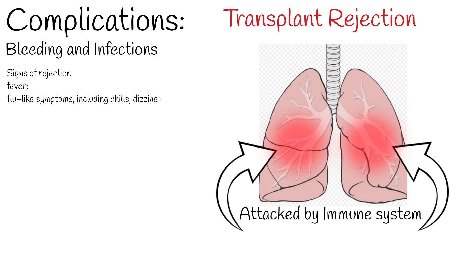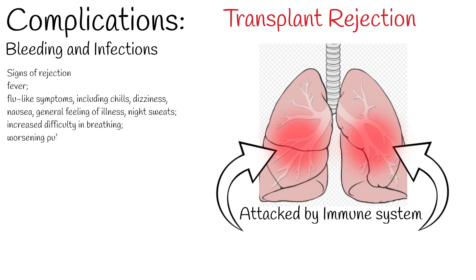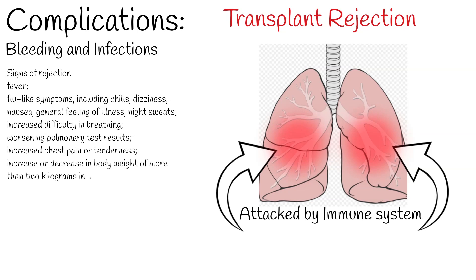Signs of rejection include: fever; flu-like symptoms including chills, dizziness, nausea, and a general feeling of illness; night sweats; increased difficulty in breathing; worsening pulmonary test results; increased chest pain or tenderness; and an increase or decrease in body weight of more than 2 kg in a 24-hour period. To prevent transplant rejection and subsequent damage to the new lungs, patients must take a regimen of immunosuppressive drugs.